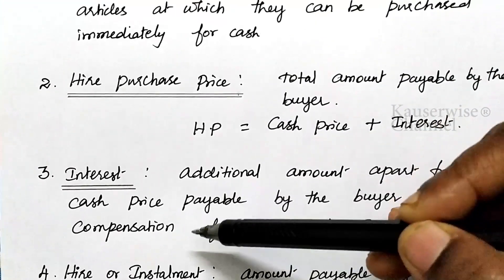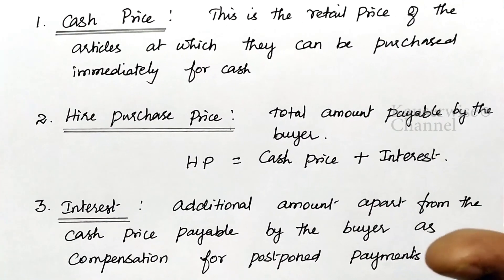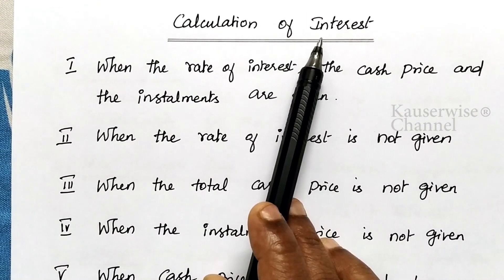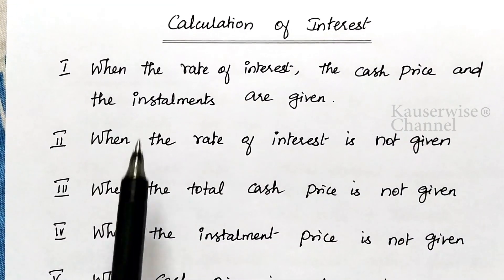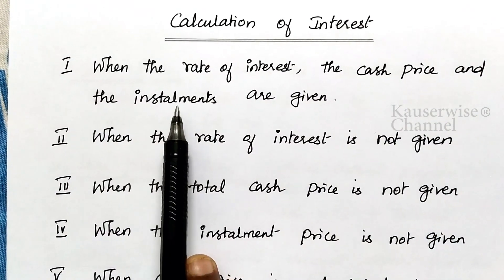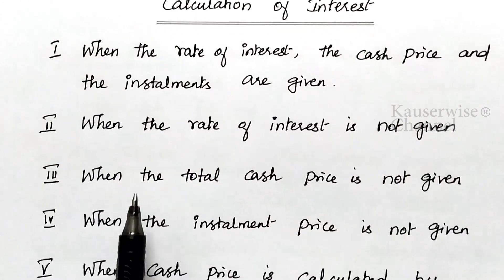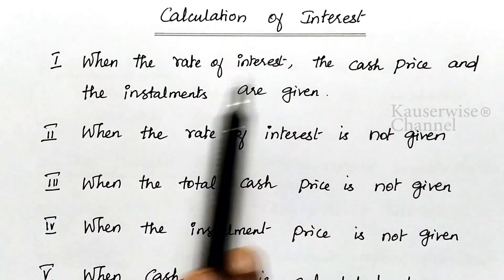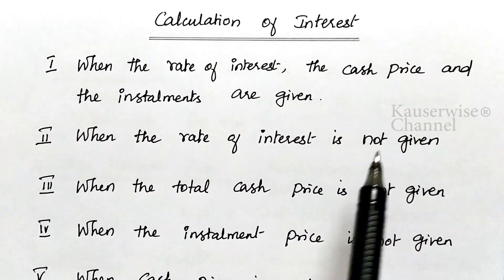These are the various important terminologies for hire purchase system. Now, let us see the different cases under calculation of interest. In hire purchase system accounting, the calculation of interest is very important. It can be done in 5 different cases. The first case is when the rate of interest, cash price, and installment are all given in the problem. The second case is when the rate of interest is not given.